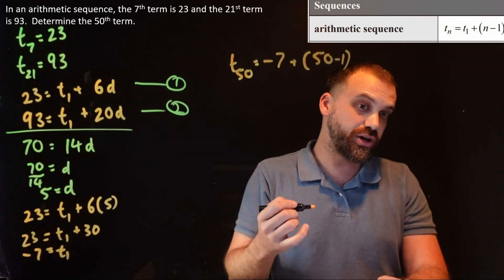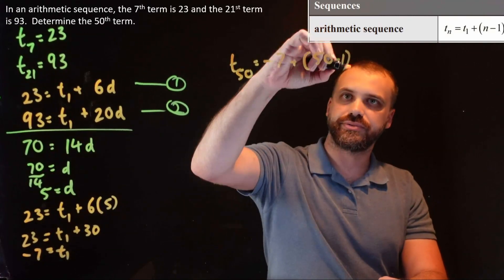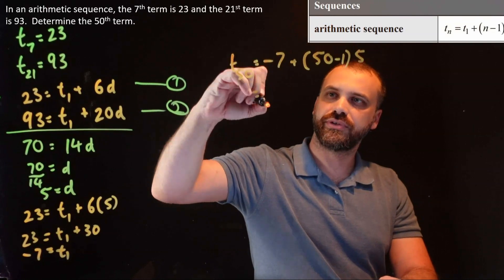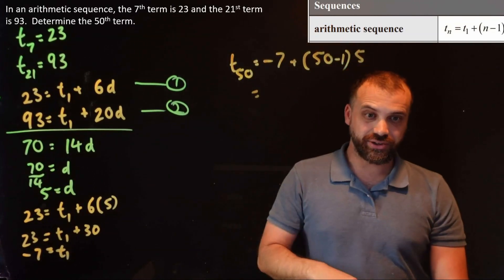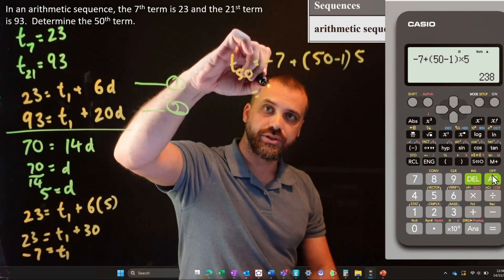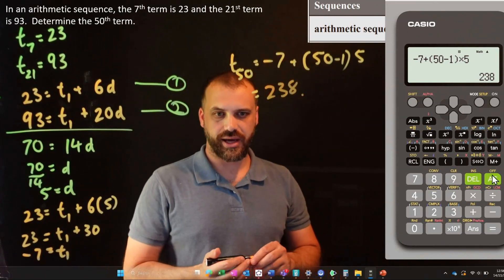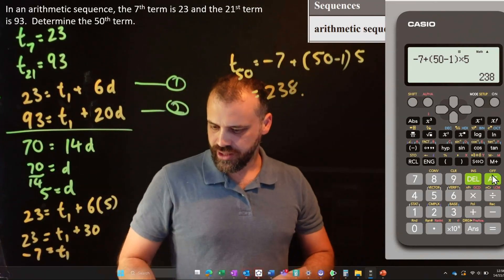So n is 50, 50 minus 1, so that's 49 times the common difference, which is 5. And then you just type that into your calculator. My final answer, 238. Done and dusted.